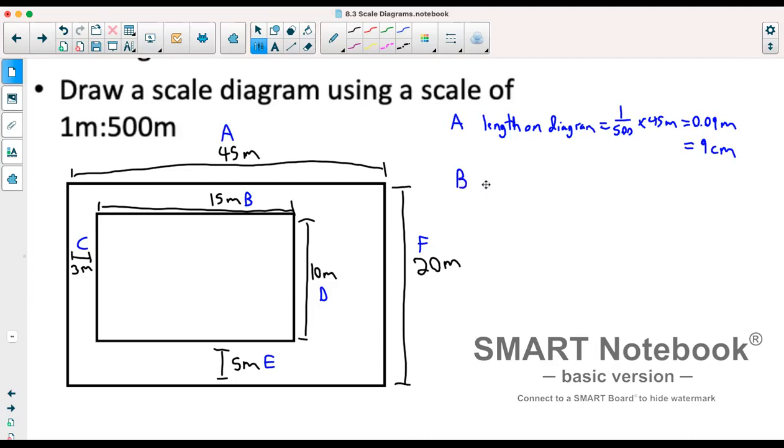Part B we had. So our length on diagram will equal 1 over 500 times 3 meters, which gives us 0.006 meters or 0.6 centimeters.